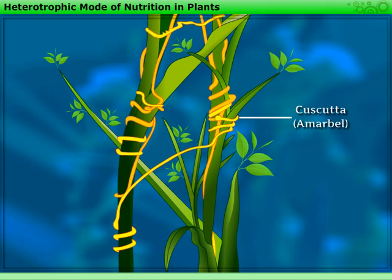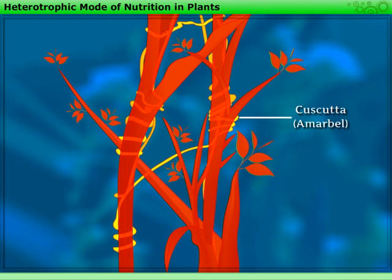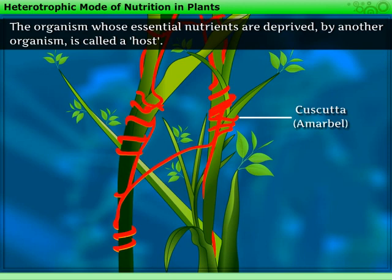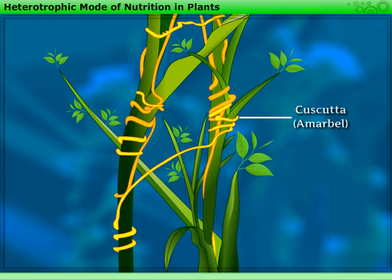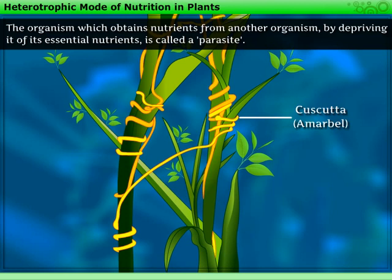For example, the Cascuta plant, also called Amarbel. Since this plant does not have chlorophyll, it climbs onto another plant and takes the ready-made food from it. The plant on which it climbs is called the host — the organism whose essential nutrients are deprived by another organism, such as a parasite, is called a host. Since this plant deprives the host of its valuable nutrients, it is called a parasite. The organism which obtains nutrients from another organism by depriving it of its essential nutrients is called a parasite.